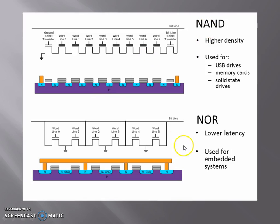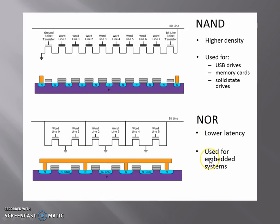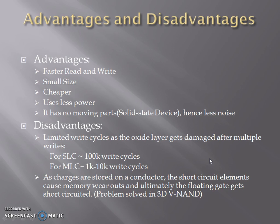Which technology to use — NAND or NOR — depends upon their advantages. NAND has the advantage of having higher storage density, therefore it is used for USB drives, memory cards, and solid-state drives. NOR has the advantage of having lower latency, therefore it is used in embedded systems. The advantages of flash are faster read and write, small size, cheaper, uses less power, and has less noise.